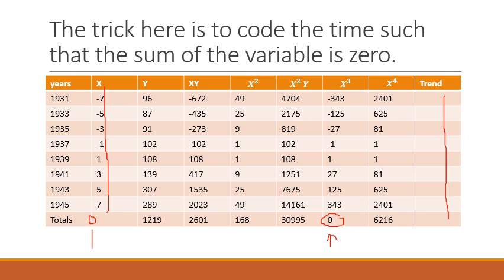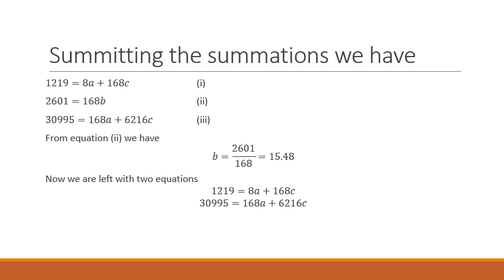In the next slide I show the necessary calculations. Σy = 1219, and Σxy is also calculated. Substituting the summations into the three normal equations — in equation one, since Σx = 0, constant b is eliminated. In equation two, since Σx = 0 and Σx³ = 0, constants a and c are eliminated. The same simplification applies in equation three.